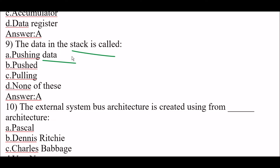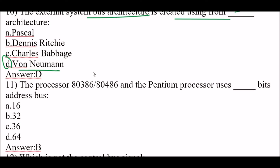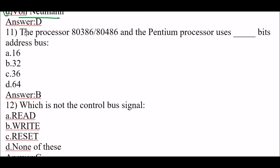Next question: the external system bus architecture is created using which architecture? The right answer is option D, Von Neumann. The external system bus architecture is created using Von Neumann architecture. Next question: the 80386, 80486, and Pentium processors use a 32-bit wide address bus. The right answer is option B, 32.